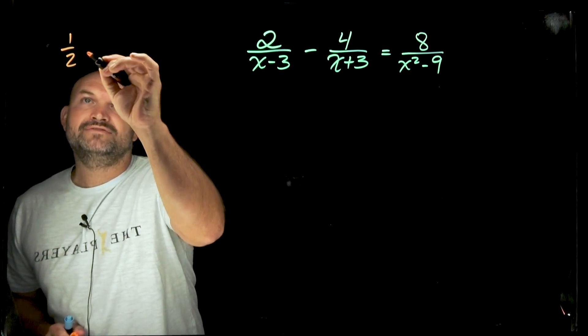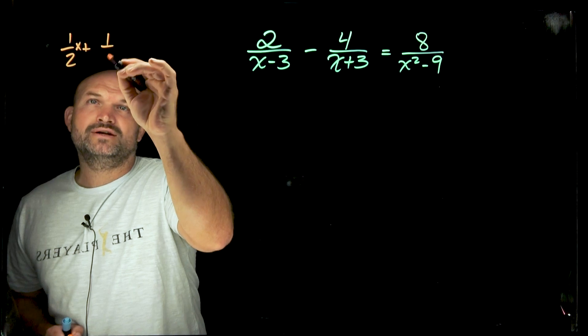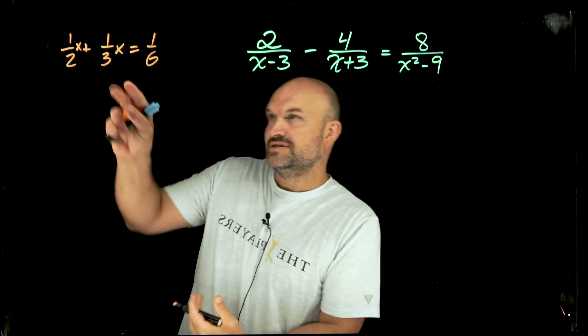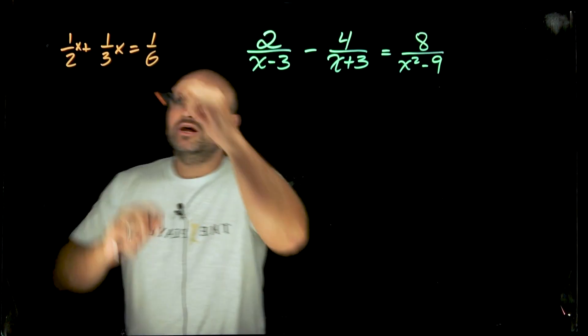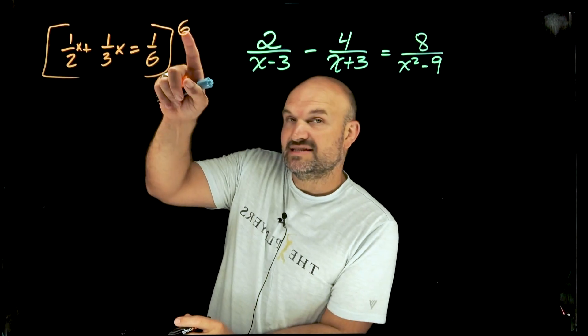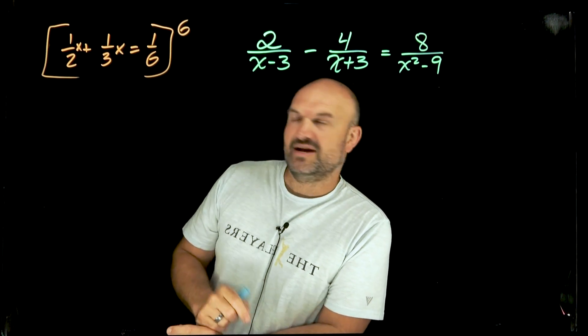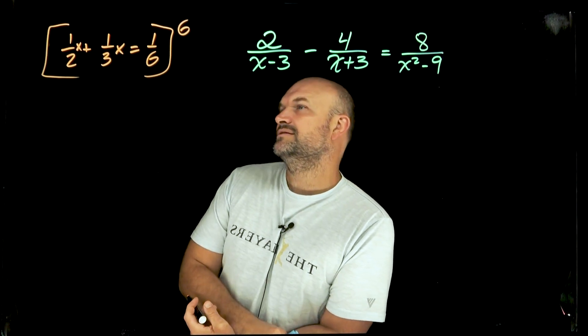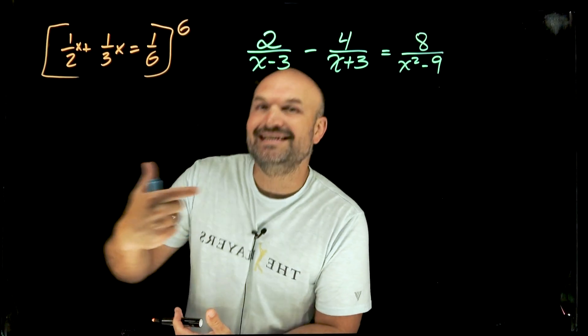What if I had like a one-half x plus a one over three x is equal to a one over six. Now, if we want to get rid of the denominators, what I'm simply going to do is notice two times three equals six. So all I simply need to do is multiply everything by six. Because six divides on six, that gets rid of that denominator. Three divides on the six, that gets rid of that denominator. And two divides on the six. You don't need to multiply by two times three times six, which would give you a 36. You don't need to multiply everything by 36. You just need to multiply by what we call the least common denominator.